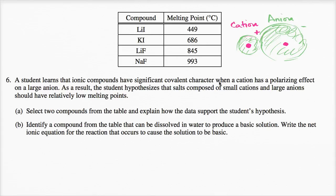And what they're saying is, you start to have significant covalent character. Remember, covalent bonds are where electrons are essentially shared between two atoms, when a cation has a polarizing effect on a large anion. These electrons that are out here are going to want to get away from all their negative friends — negative charges repel each other — and they might want to spend more time closer to this cation. So they're going to start having covalent character, being more and more shared between the two.